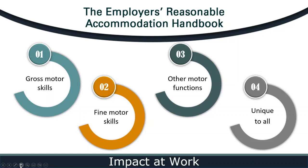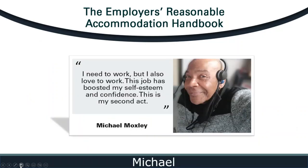How about another story? This one is about Michael and was shared in the OOD Works newsletter on June 17, 2022. Michael has a physical disability caused by a degenerative joint disease. During an OOD hiring event, Michael interviewed with Hyatt Regency in Cincinnati. Shortly after that, he was hired as an internal hotel operator — a customer service role that allows him to work in a stationary position. Michael says that he finds out what the caller needs and provides exemplary customer service. Michael, who is 64, said, 'I'm not retiring yet. I need to work, but I also love to work. This job has boosted my self-esteem and confidence. This is my second act.'